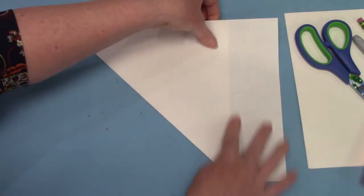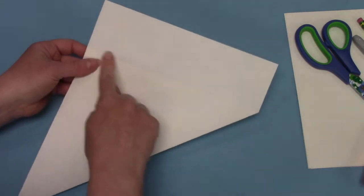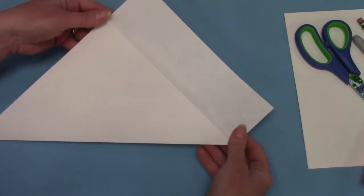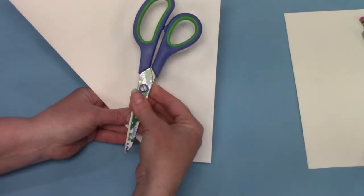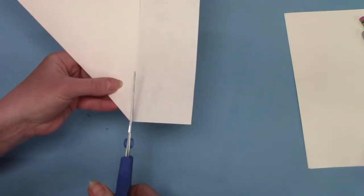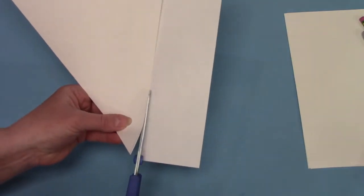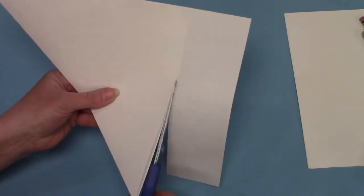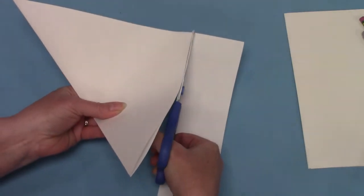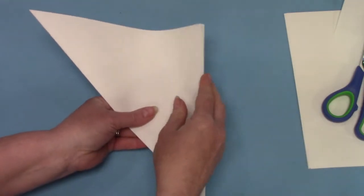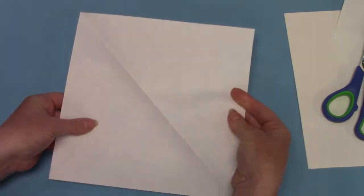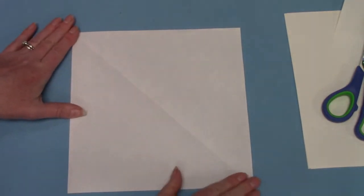Now you'll notice that there is kind of an edge here and I am going to cut that with my scissors. So I'm going to take my scissors and cut right along that line and that will get rid of the edge of the paper so that when I open my triangle up it becomes a square.